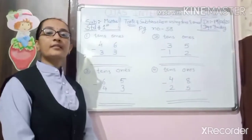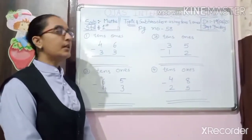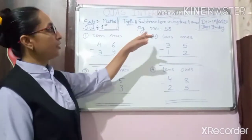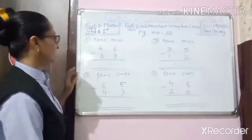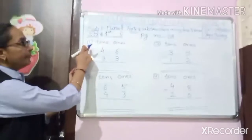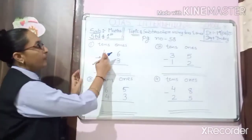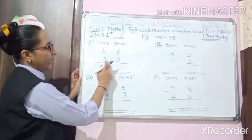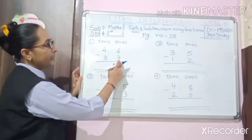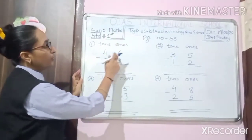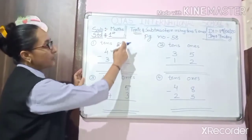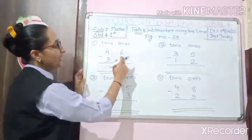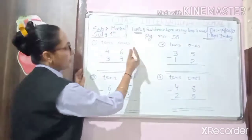Our next topic is subtraction using tens and ones. Here number 1: 46 and 33. So what to do? First we have to minus only the ones place number.